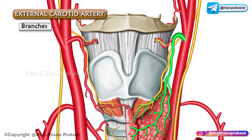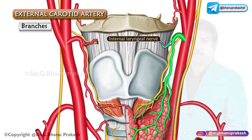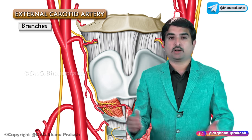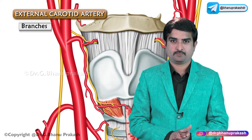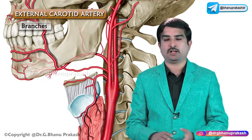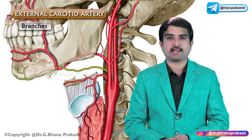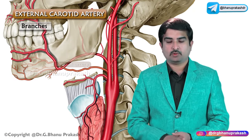Apart from its terminal branches to the thyroid gland, the superior thyroid artery gives off an important branch called the superior laryngeal artery, which pierces the thyrohyoid membrane in company with the internal laryngeal nerve.